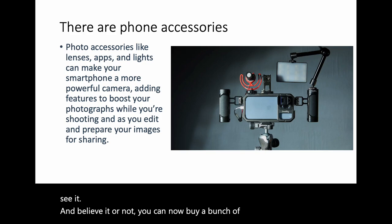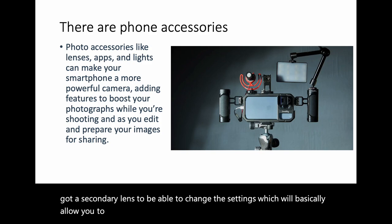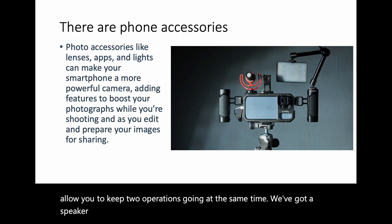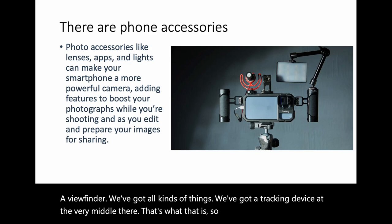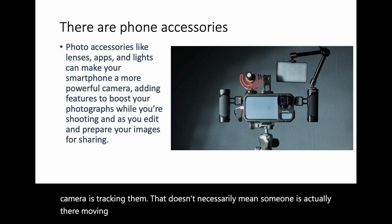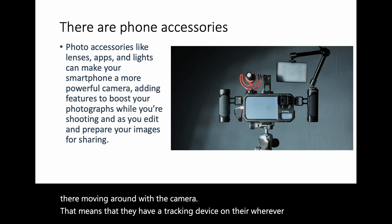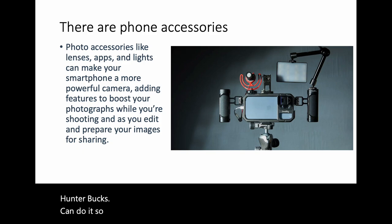You can now buy a bunch of accessories for your phone. There's a secondary lens to change settings, a speaker, Wi-Fi capability to upload live, a viewfinder, and a tracking device at the center. YouTubers who walk around with the camera tracking them — that doesn't necessarily mean someone is moving the camera. They have a tracking device on their phone apparatus that literally senses where they are and moves to follow them. About a hundred bucks. Stuff is changing rapidly.